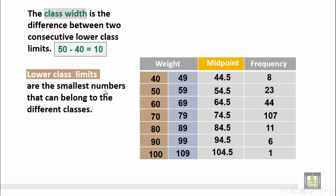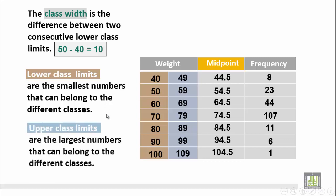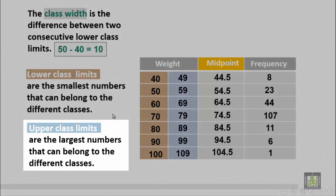The upper class limits are the largest numbers that can belong to the different classes.